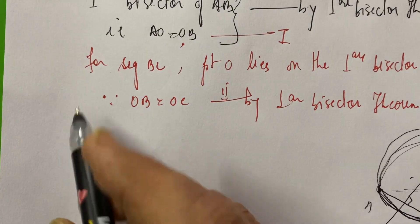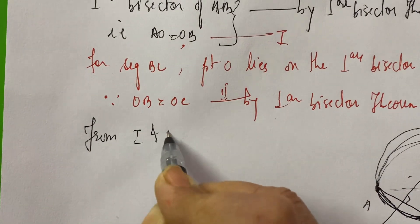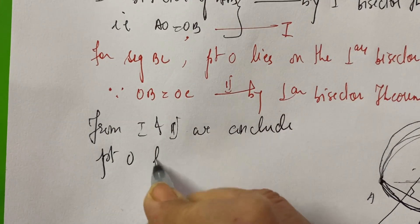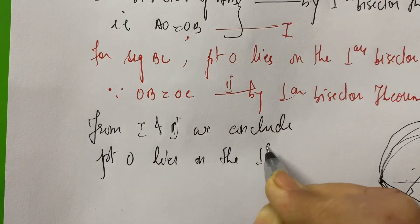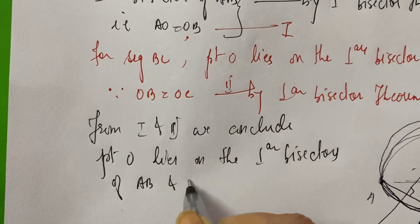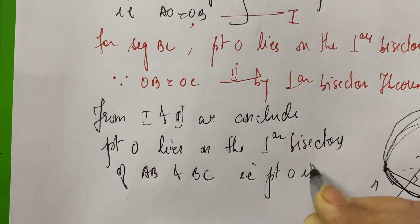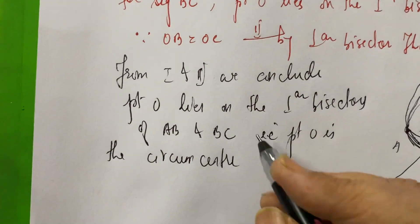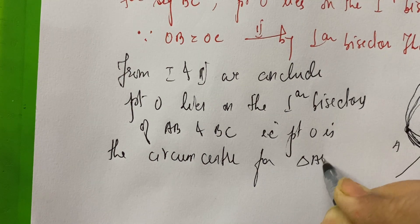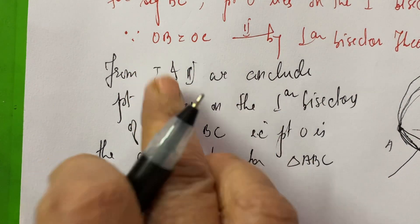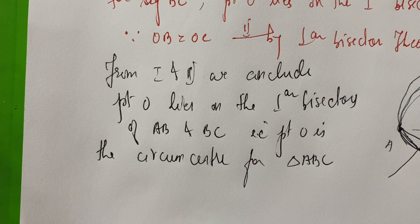So from equations 1 and 2, what do we conclude? From 1 and 2 we conclude that point O lies on the perpendicular bisectors of AB and BC — that is, point O is the circumcenter for triangle ABC. So the three points on the circle are non-collinear.